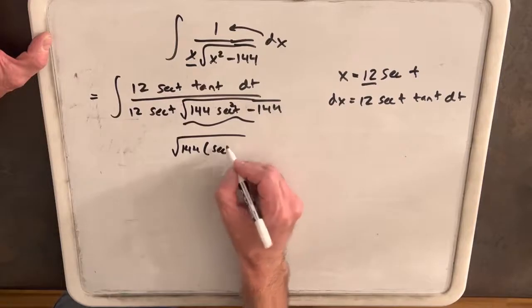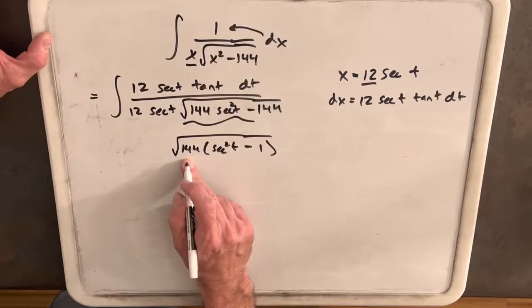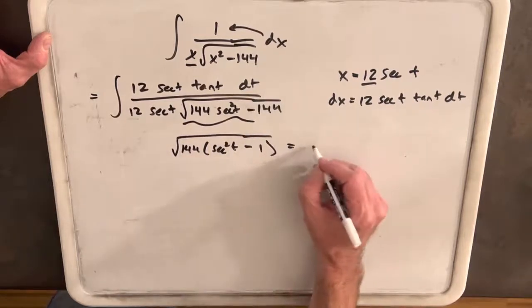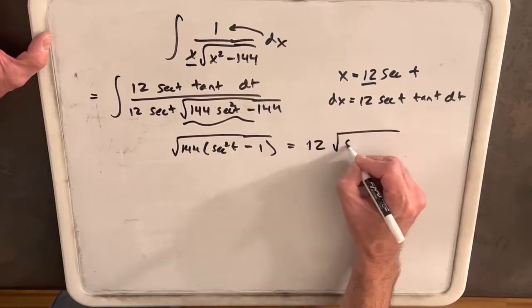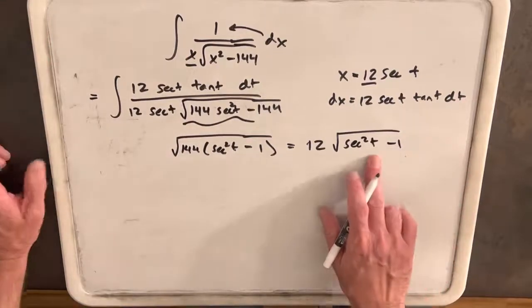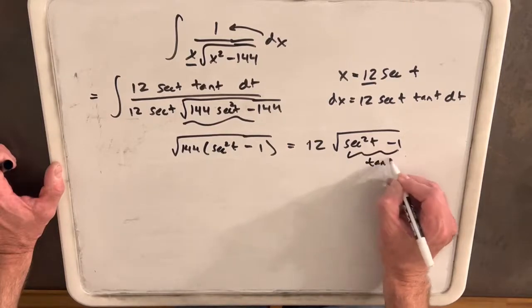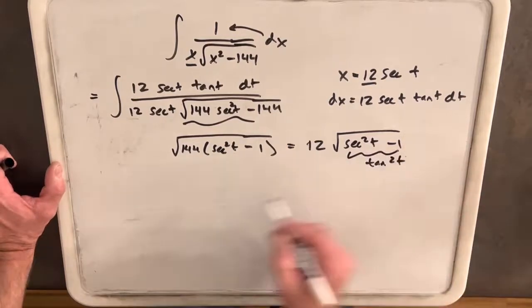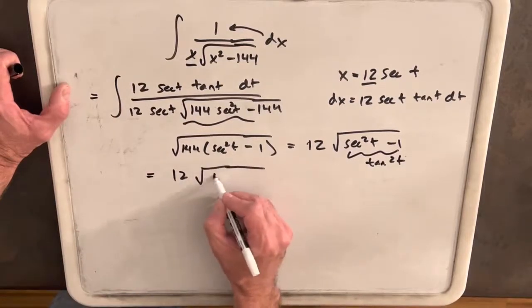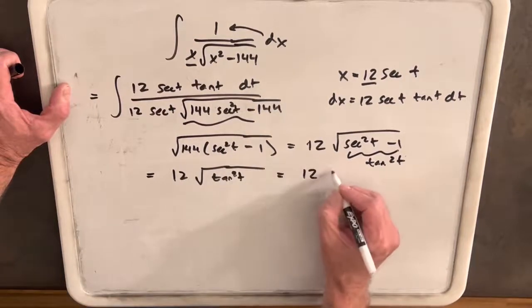When we factor out 144, which is 12 squared, we can rewrite this whole thing as 12 times the square root of secant squared minus 1. Now we have that identity because this is just tan squared t. Rewriting, we have square root of tan squared t, which is just tan, so this whole thing is 12 tan t.